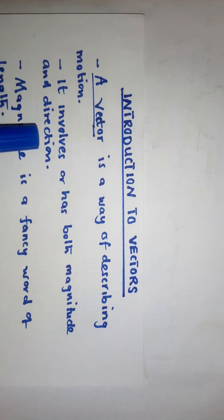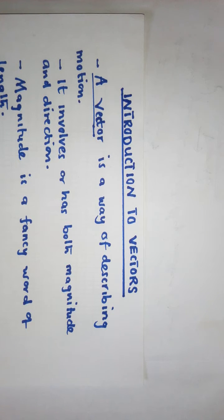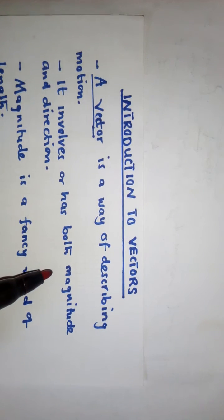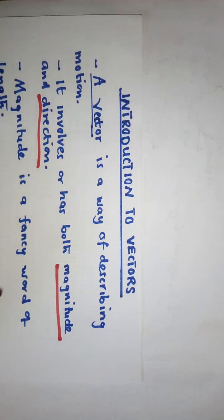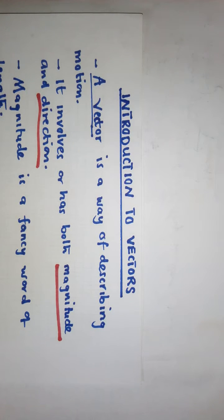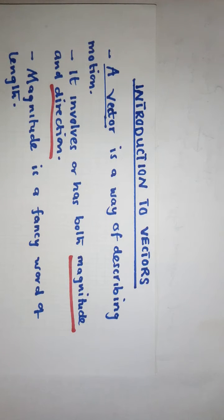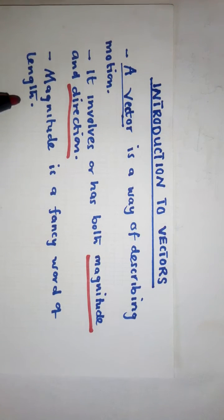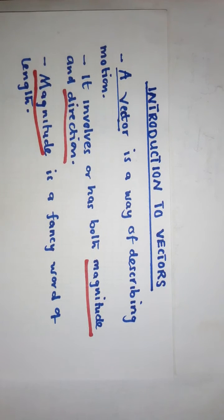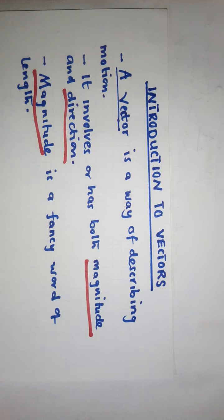A vector involves or has magnitude and direction — these are the two most important things in vectors. Don't worry, we'll talk more about magnitude and direction. Direction is simple — which direction are you going, maybe north, south, things like that. For magnitude, it may be difficult for some people. Magnitude is a fancy way of saying length. So if you want to say 'length' in a fancy way, you say 'magnitude'.